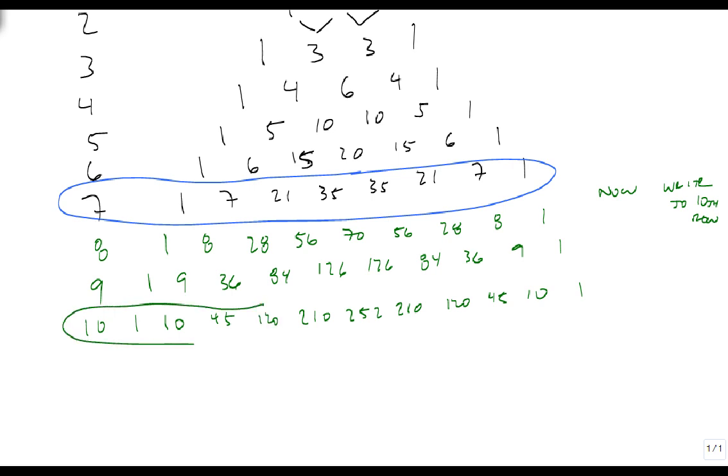So again, we have found the row that we were asked to do. And so here's where Pascal's Triangle is nice, is it gives you a very systematic way of creating the coefficients that you need. The downside is that you always have to do every step up to the row that you need. But that's how we can write the rows of Pascal's Triangle.